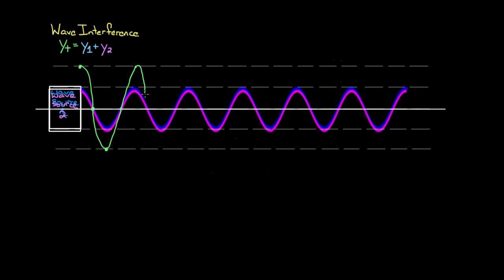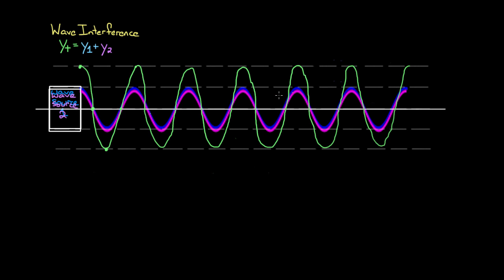We call this constructive interference, because the two waves combined to construct a wave that was twice as big as the original waves. When two waves combine and form a wave bigger than they were before, we call it constructive interference. Because these two waves combined perfectly, sometimes you'll hear this as perfectly constructive or totally constructive interference. You can imagine cases where they don't line up exactly, but you still might get a bigger wave — that's still constructive, just not totally constructive.